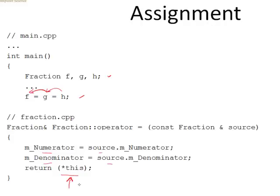In other words, I'm going to return the calling object through this reference to fraction. In that way, by returning the calling object, I can chain the operation so that when the compiler executes this, it's going to execute the assignment of h to g — g is going to be the calling object first — and then when it executes g being assigned to f, f becomes the calling object. So let's step through this and see how it works.